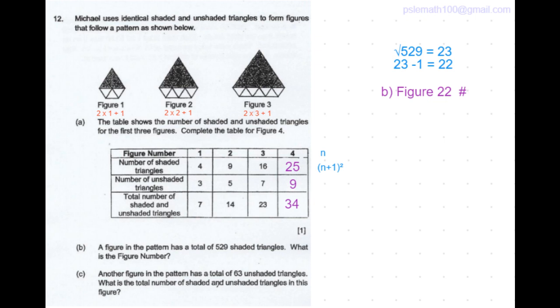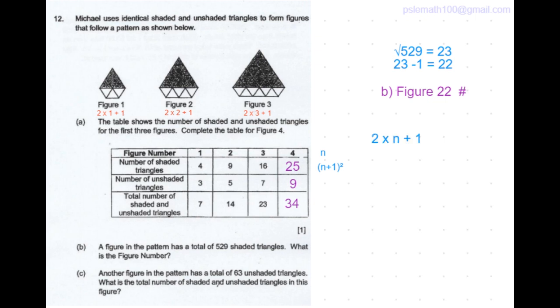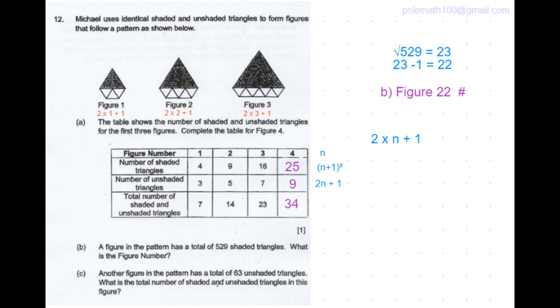So for figure n, it would be 2 times n plus 1 which can be written as 2n plus 1. The numbers in unshaded triangles follow the constant difference pattern. If you have trouble deriving formula, please look up at the link at the right corner.